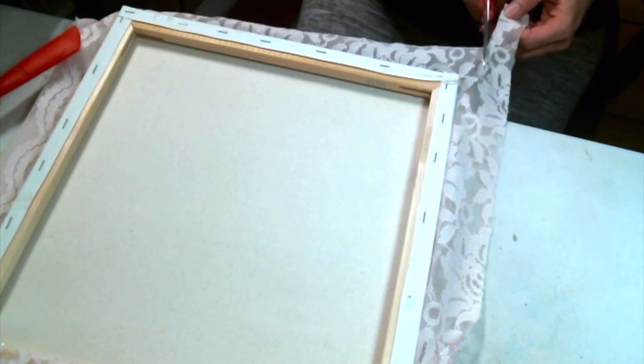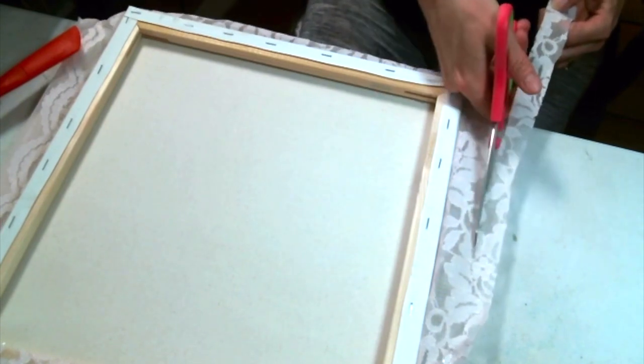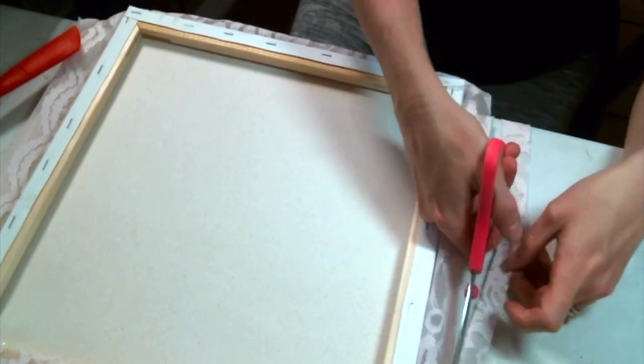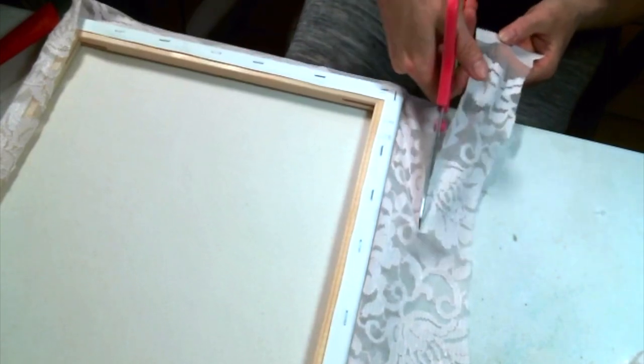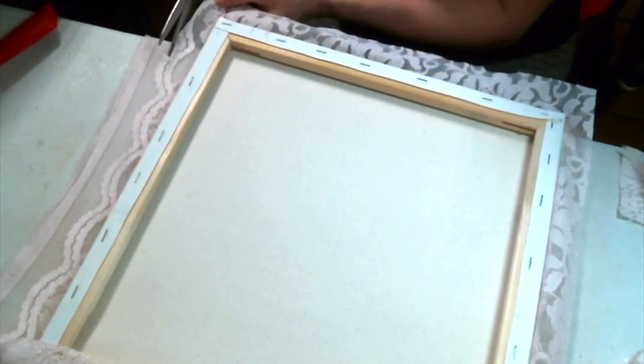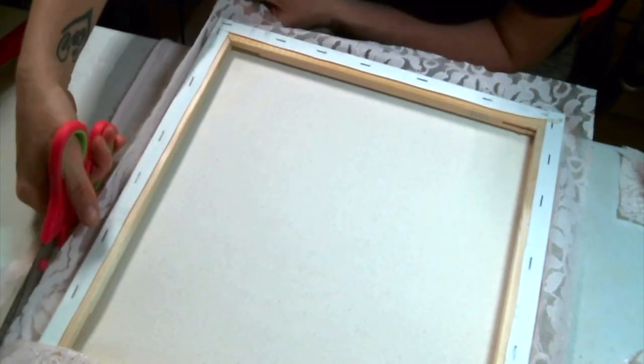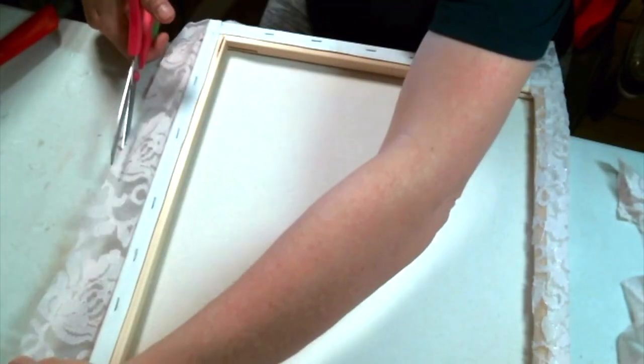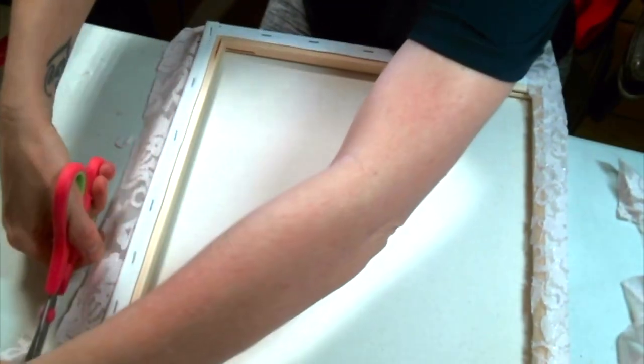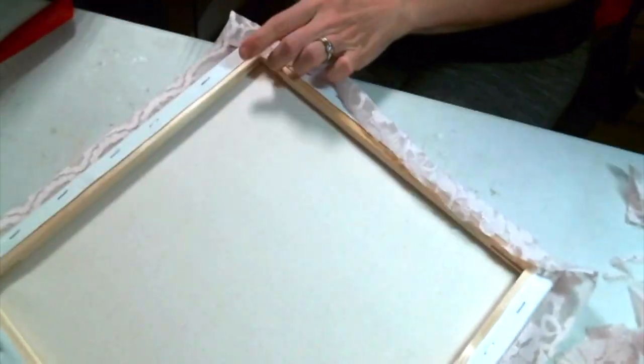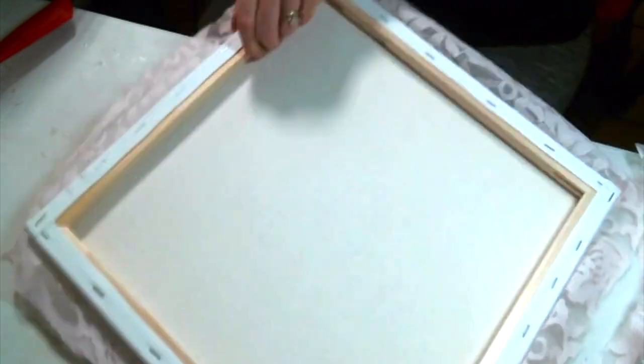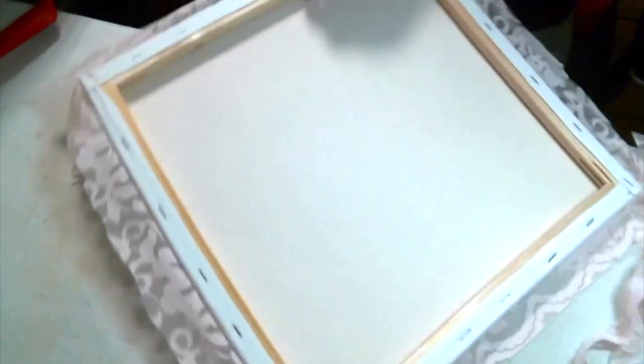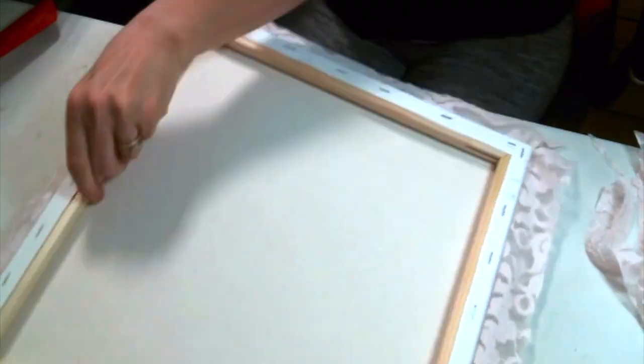But I'm still leaving enough to wrap around the back because I want to be able to glue it down to the back side and then I'm going to snip down the middle of the corners just so that they will lay down more nicely and not be so bulky on the back of the canvas. And you snip almost up to the canvas but not quite. You don't want any of the canvas peeking through on the front.